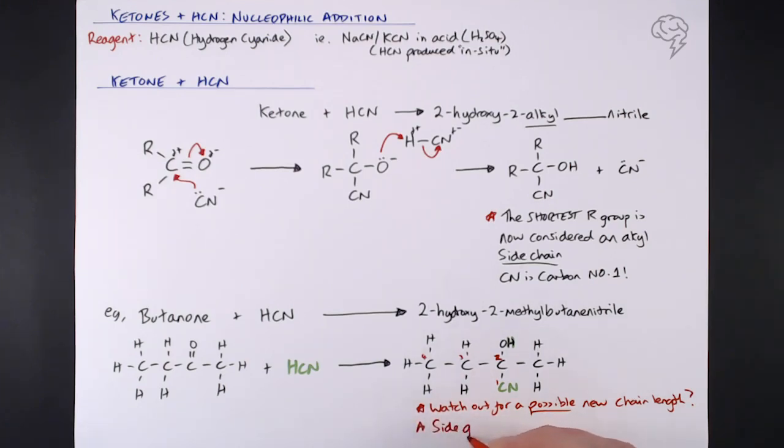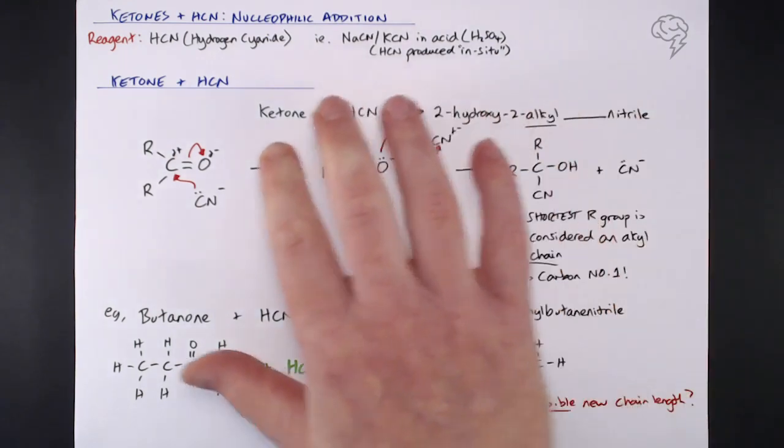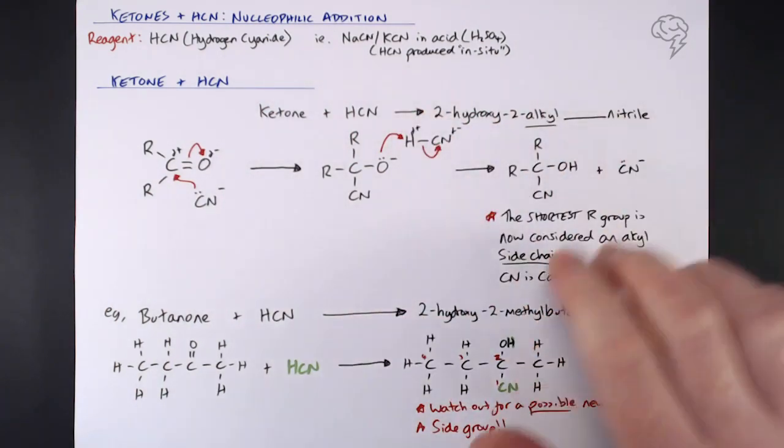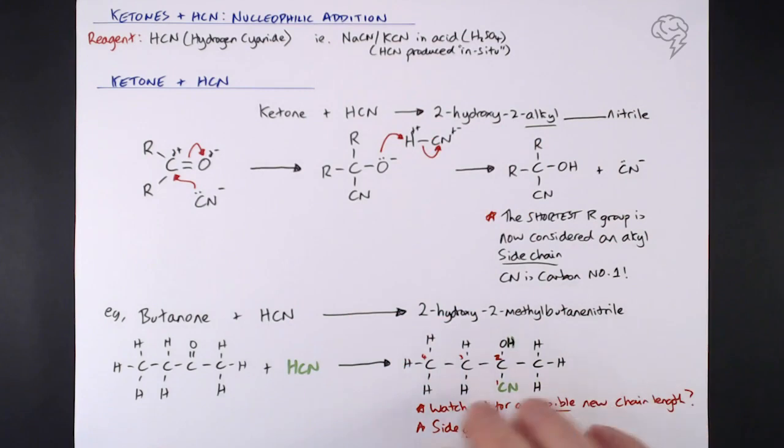Ketones undergo nucleophilic addition with HCN and you get a side chain, so watch out for that side group and make sure you put it in the name. The mechanism is exactly the same; the product is different because of that side chain and possible new carbon chain length, unlike aldehydes where you definitely get a new chain length. Once you've done a couple of examples you're laughing.